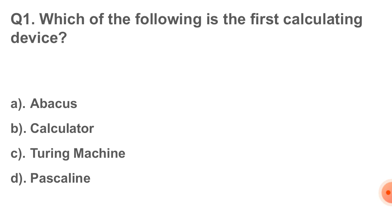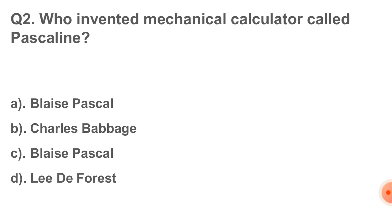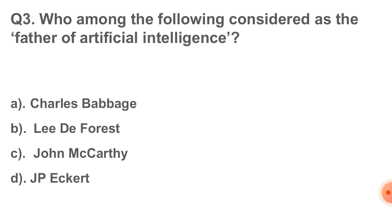Correct answer is option number A, that is Abacus. Next question: who invented the mechanical calculator called Pascaline? Correct answer is option number C, that is Blaise Pascal.